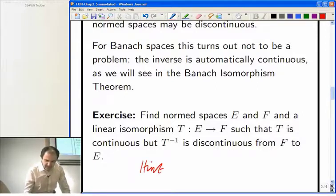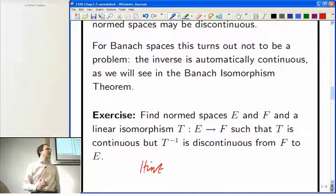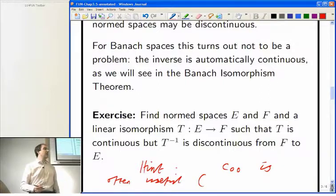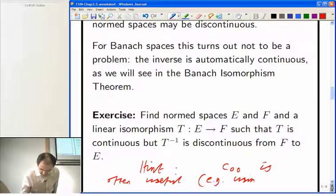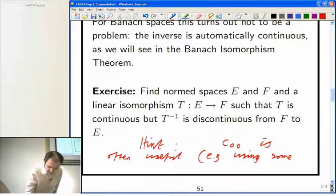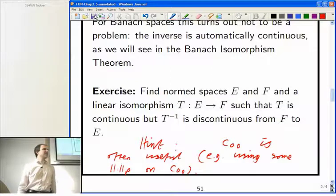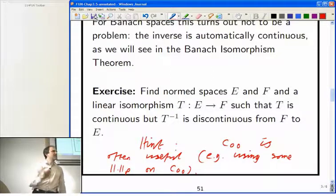Hint, whenever something is true for all Banach spaces, and you want to find a norm space counterexample, C00 is often useful. You can put lots of different norms on it, like one of the little Lp norms or L-infinity or whatever, e.g. using some norm p but on this subspace. That gives you a really nice supply of incomplete norm spaces, and it's very useful when you're looking for interesting linear maps that do bad things. So, I'll let you think about that exercise.